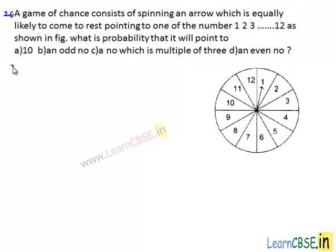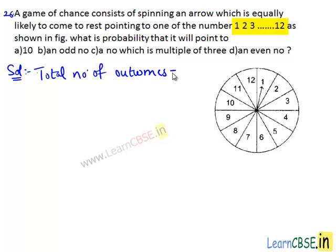Moving on to the solution: in the game of chance, the spinning arrow can come to rest pointing to any one of the numbers 1, 2, 3, so on up to 12, in 12 ways. So the outcomes 1, 2, 3, so on up to 12 are known as equally likely outcomes since each of them has an equal chance of happening. Then we can write total number of possible outcomes equals 12, which are 1, 2, 3, so on up to 12.